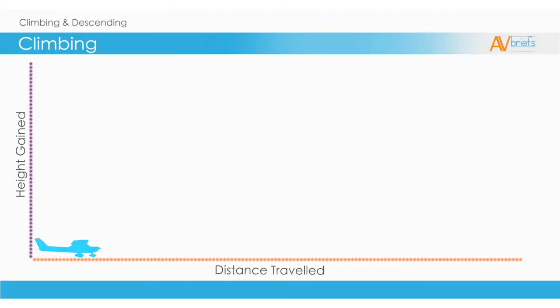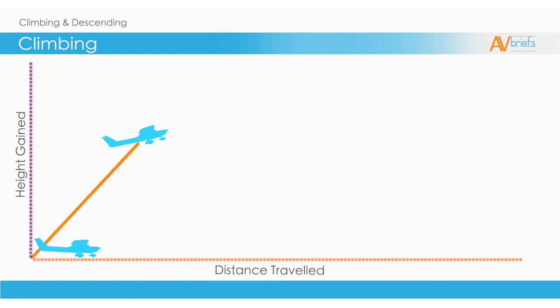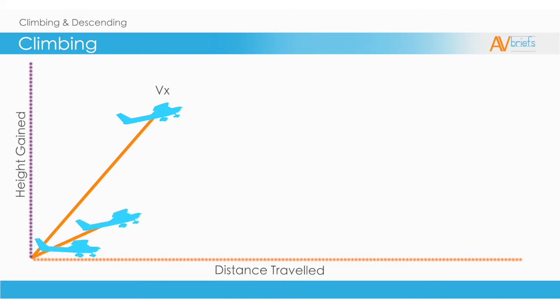The three different types of climb we have available are summarized here for us. Vx is the maximum height gained in the least forward motion or distance traveled. Vy is the maximum height gained in the least amount of time.